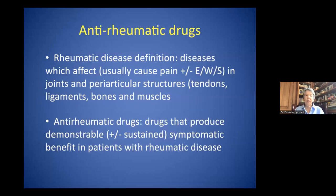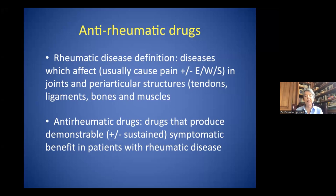An anti-rheumatic drug, from a definition point of view, addresses rheumatic disease — a disease which affects and usually causes pain, redness, warmth, and swelling in joints and peripheral articular structures such as tendons, ligaments, bones, and muscles. Anti-rheumatic drugs produce demonstrable, sometimes sustained, sometimes not, symptomatic benefit in patients with rheumatic disease.